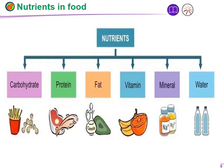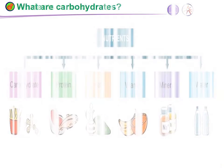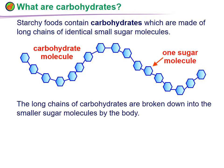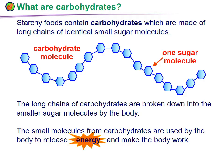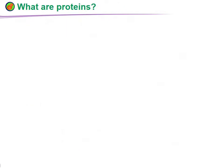What are carbohydrates? Starchy foods like potatoes contain carbohydrates, which are made of long chains of identical small sugar molecules. The longer chains of carbohydrates are broken down into smaller sugar molecules by the body. These small molecules are used by the body to release energy and make the body work. Carbohydrates are the quick source of energy.